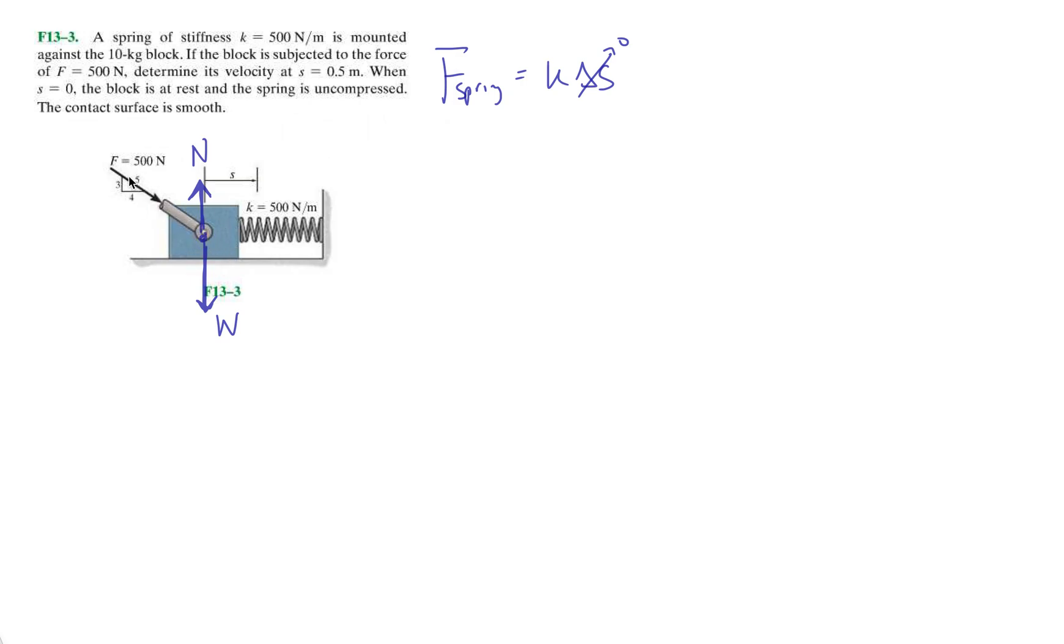And then we have this force here, 500 newtons, and then they give us a special right triangle. But we're going to determine what's the velocity once it's being compressed up to 0.5 meters. So let's begin by, the force in the y direction is not really important, so let's just go with the force in the x direction. Let's break this 500 newton force down into its components.